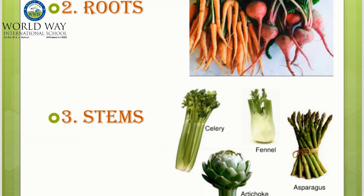Third are the vegetables which we eat in the form of stem. The examples for this are celery, fennel, asparagus, and artichoke. These are the vegetables which we eat in the form of the stem of the plant.